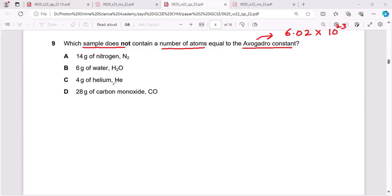Let's see why option A does not correct here. Option A is 14 grams of nitrogen. If I choose one mole of nitrogen, it means I am talking about 6.02 times 10 raised to the power 23 molecules of nitrogen.